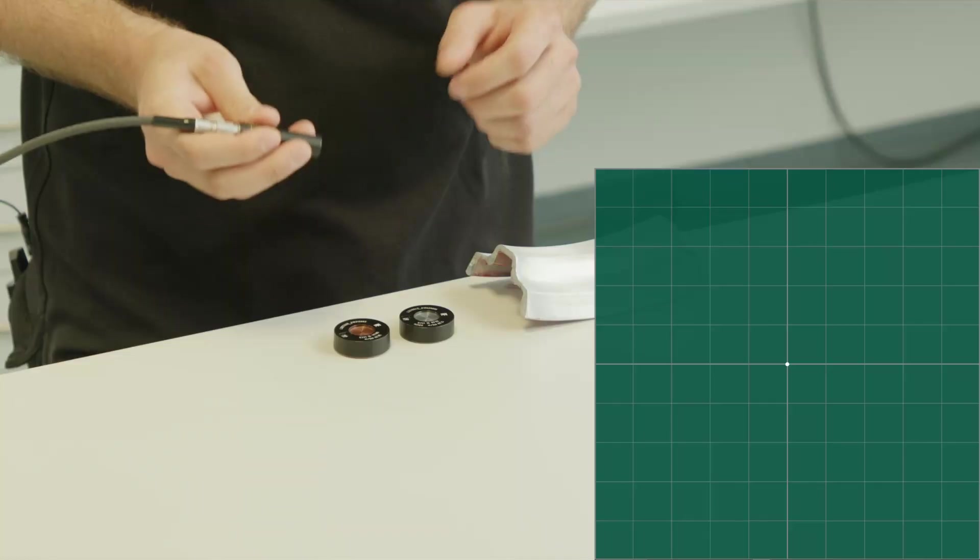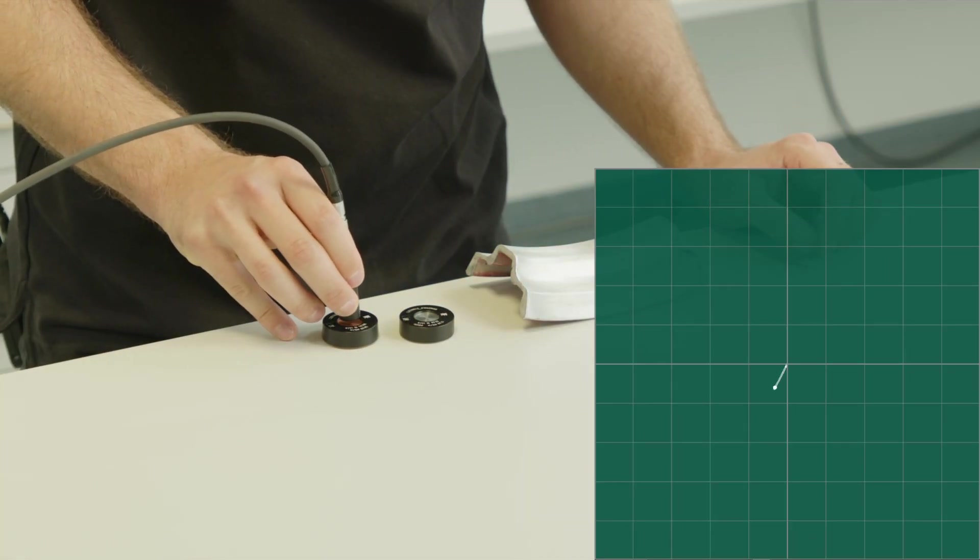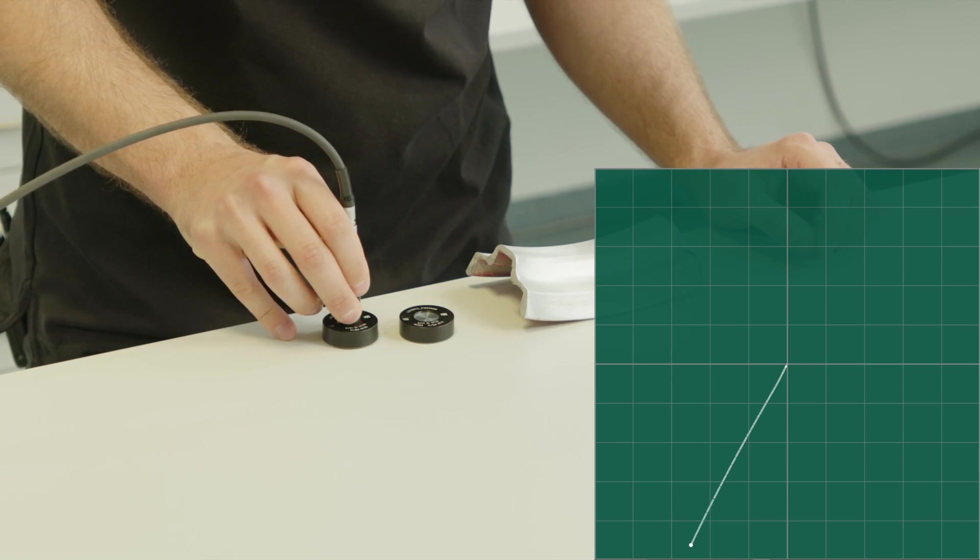Let's start. We can take a measurement on those standards. So this is a copper standard with 58.2 Megasiemens per meter and you see the signal.